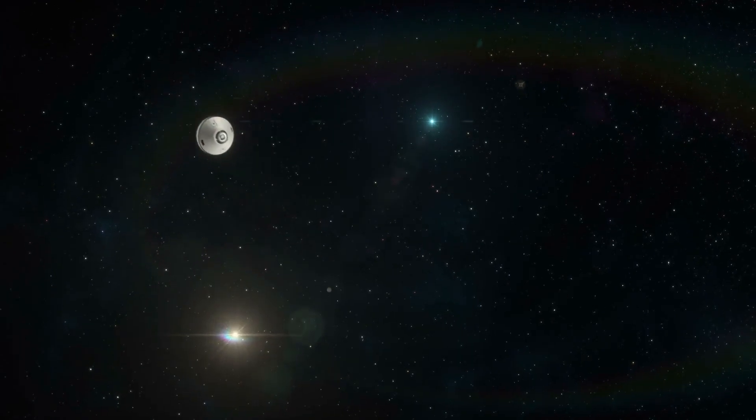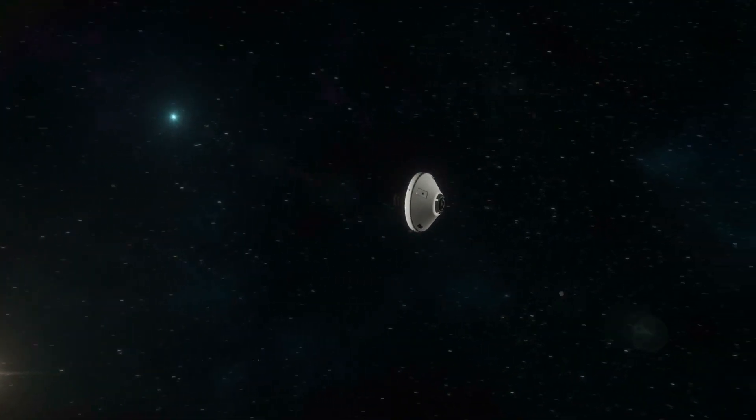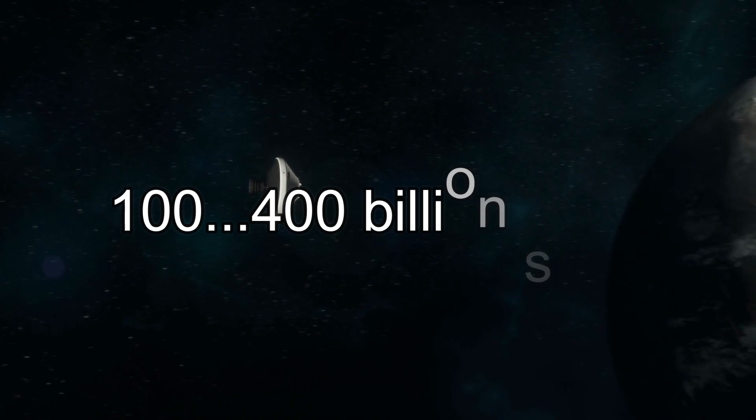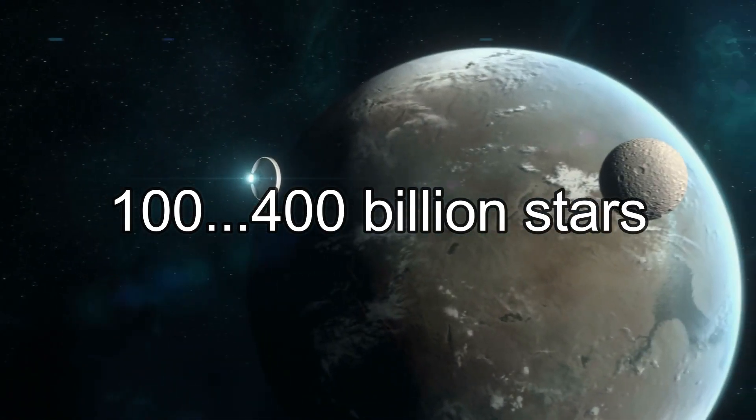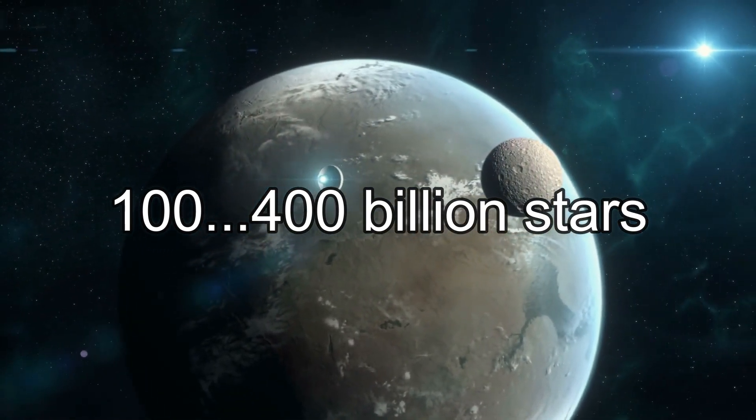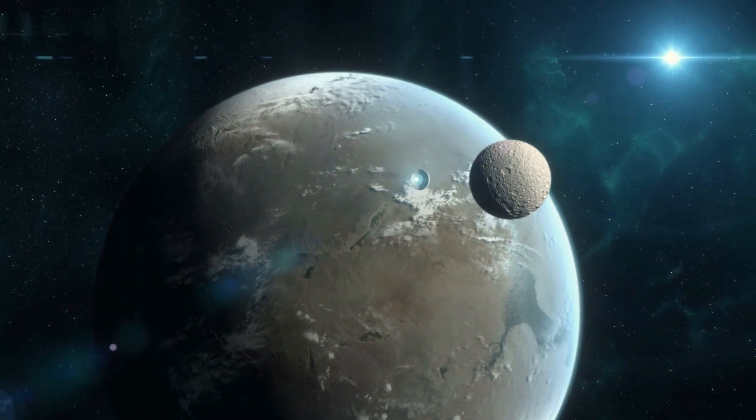However, keep in mind that this is only a rough estimate, as the Milky Way galaxy contains between 100 and 400 billion stars. And since each of those stars is expected to have at least one planet, there are likely trillions of planets out there.